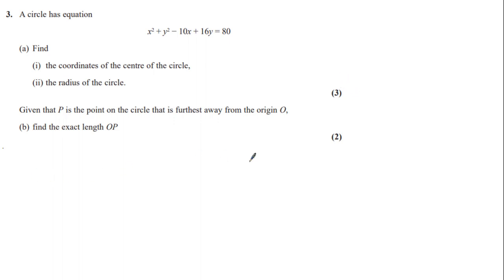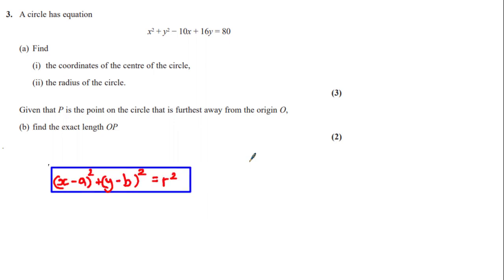We should already know the form of the equation of a circle centered at the points A and B with a radius R, which follows the form: x minus A all squared plus y minus B all squared is equal to R squared. We simply need to get it into this form in order to determine the coordinates of the center and the radius.